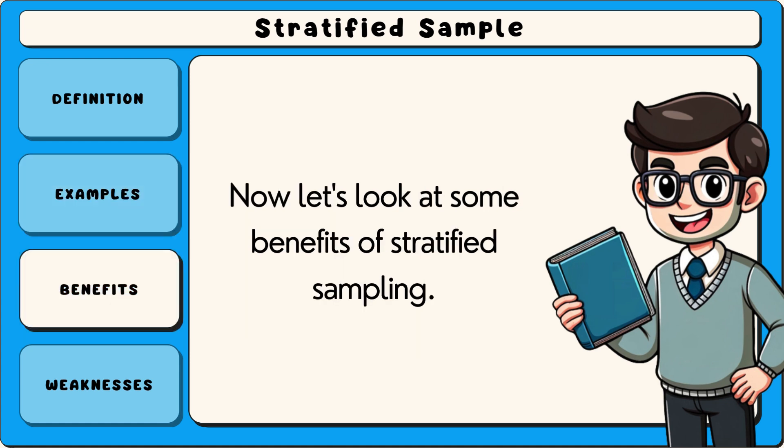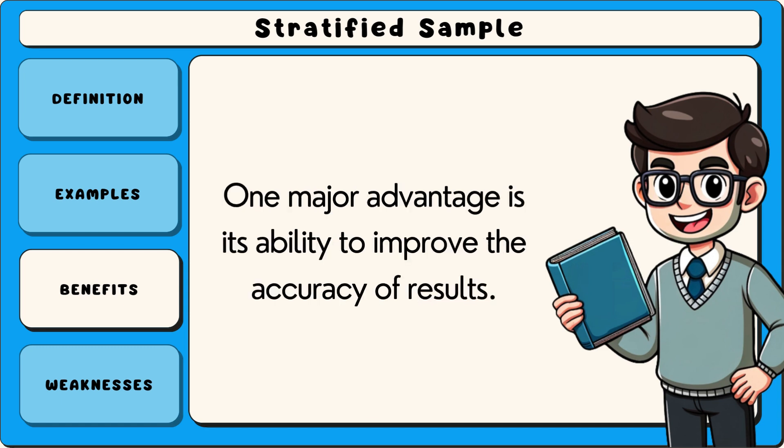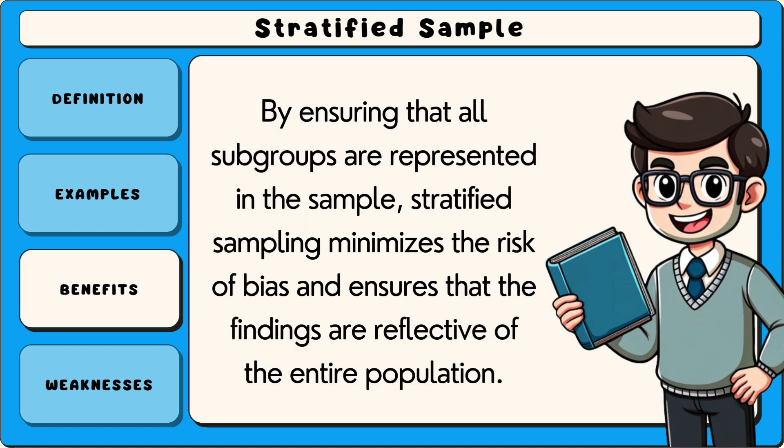Now let's look at some benefits of stratified sampling. One major advantage is its ability to improve the accuracy of results. By ensuring that all subgroups are represented in the sample, stratified sampling minimises the risk of bias and ensures that the findings are reflective of the entire population.